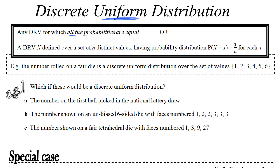Uniform is the key word there. This is any distribution where all the probabilities are equal. Alternatively we can say it is defined over a set of n distinct values where the probability of each is 1 over n. So for example if you had seven different outcomes they would all have the probability 1 seventh.